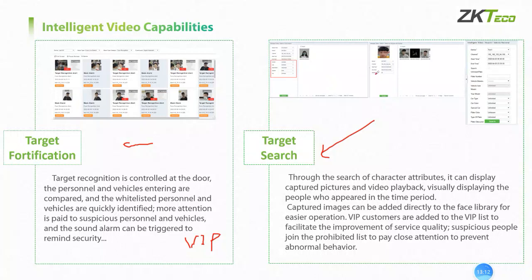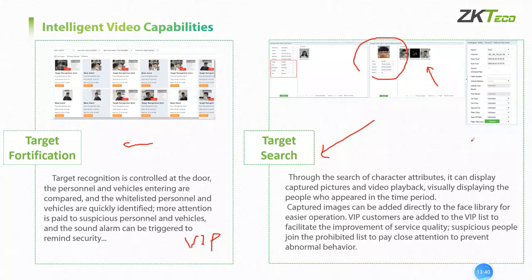We can also search by personal image — using a person's image, we can search for corresponding events on the right side. About vehicle search, we can search by conditions such as car color, car type, and so on.